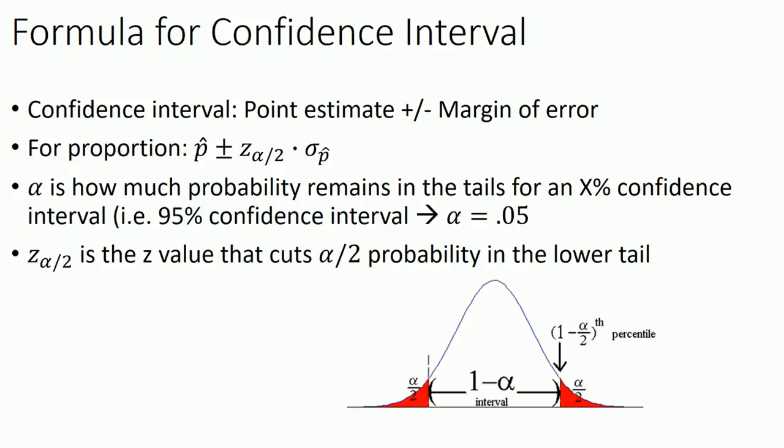Now, the formula is essentially you take your point estimate and you add or subtract the margin of error to get your upper or lower bound. The margin of error is the product of two numbers. First of all, the standard error, and then this z alpha over 2, which is just a way of saying how many standard errors do we have to go in order to get the right amount of percentage in the middle? For example, if we're looking at a 95 percent confidence interval...